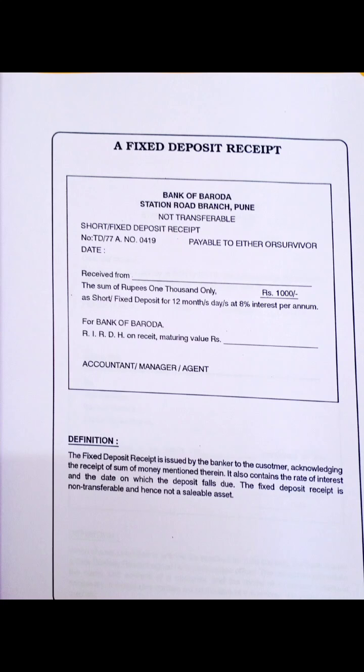Once you practice this once or twice it will come easily. The definition: a fixed deposit receipt is issued by the banker to the customer acknowledging the receipt of the sum of money mentioned therein. It also contains the rate of interest and the date on which the deposit falls due. The fixed deposit receipt is not transferable and hence not a saleable asset.